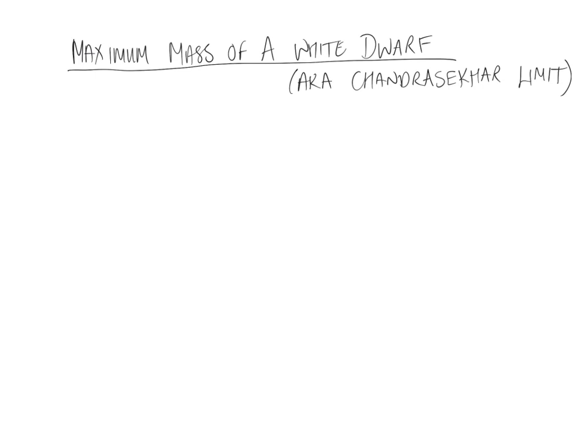In this short video I'm going to sketch through the calculation that gets you to the maximum mass of a white dwarf, also known as the Chandrasekhar limit. White dwarfs are weird because they're held up by degeneracy pressure, which causes the radius to decrease as the mass increases. This means they hit a limit where they're no longer able to be held up, become too dense, and collapse to neutron stars. Fundamentally, it's a quantum mechanical thing — degeneracy pressure — that holds up white dwarfs.